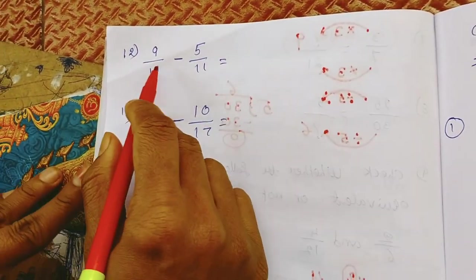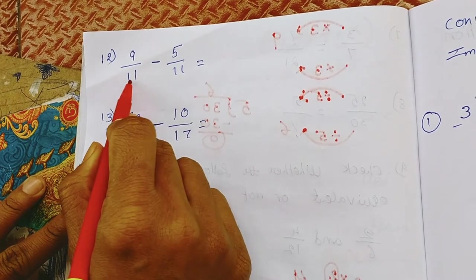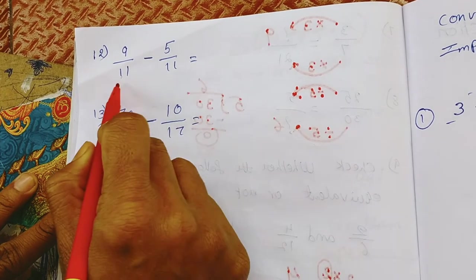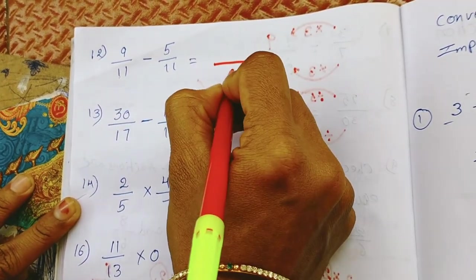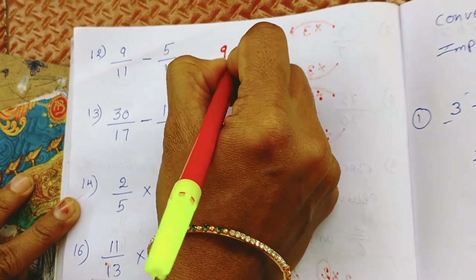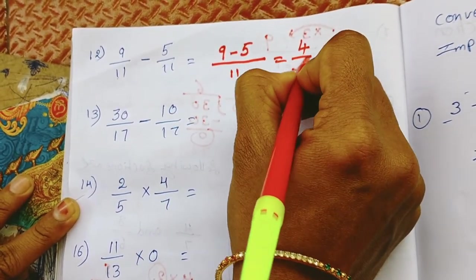And next one is subtraction in fractions. In this also first we look at is the denominators are equal or not. Here the denominators are equal. That means here also we take only 1 denominator and take this as same, 9 minus 5. That is this question 9 minus 5 is 4 by 11.